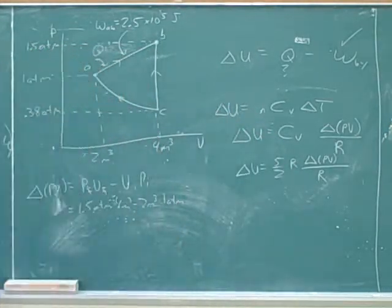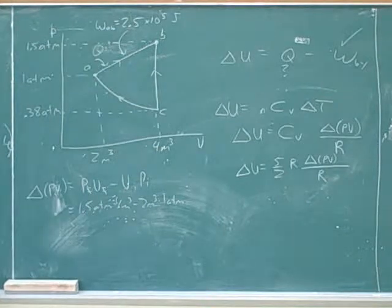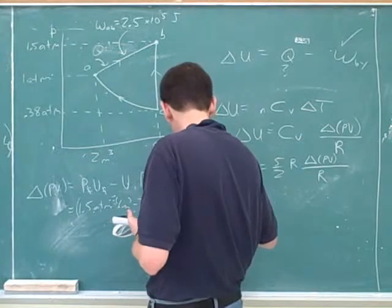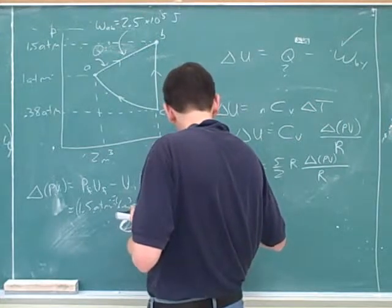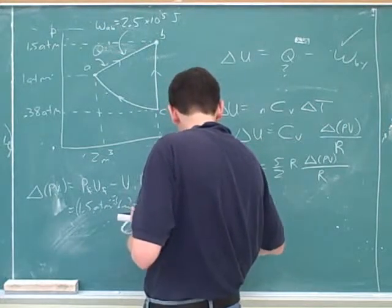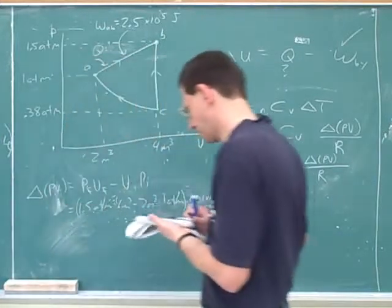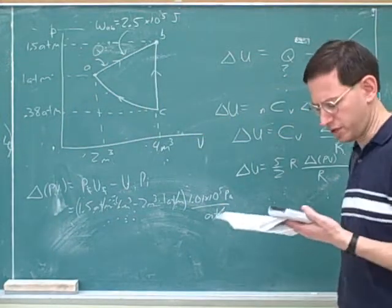So, how do we do that? So make a conversion, and this is just 1.01, or something like that. So, are we multiplying and dividing by 1.01? Multiplying. Right. So, there's 1.01 times 10 to the fifth pascals in an atmosphere, and now the atmospheres would cancel.